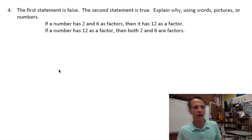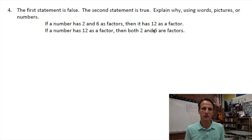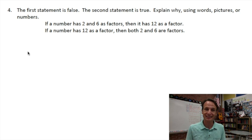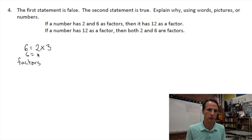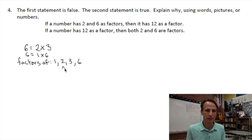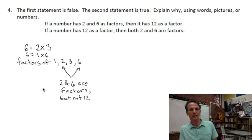One way to show the first statement is false is with an example. We can use six itself. Six equals two times three. The factors of six are one, two, three, and six. So two and six are factors of six, but not twelve. Of course, in this case, six is less than twelve, so how could twelve be a factor? Even a number greater than twelve might not have twelve as a factor.